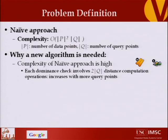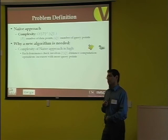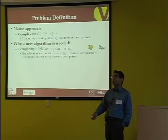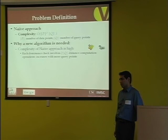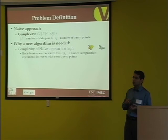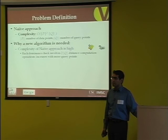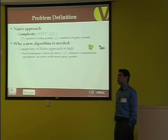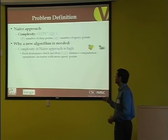A question from the audience: if distance computation is the limiting factor and you cache distances for one query, you don't need to compute every pair. The speaker acknowledges this is one improvement, but the naive approach is shown just to demonstrate that even improved naive approaches are not good enough. Let's go to the properties.